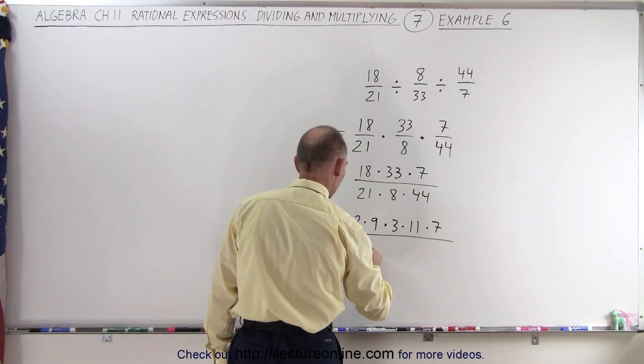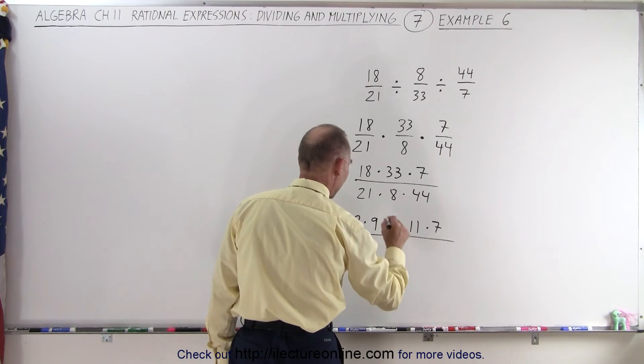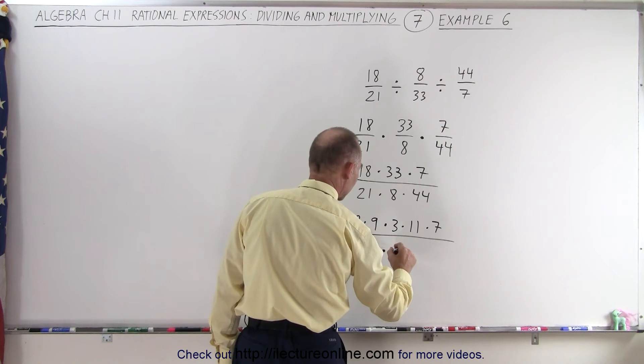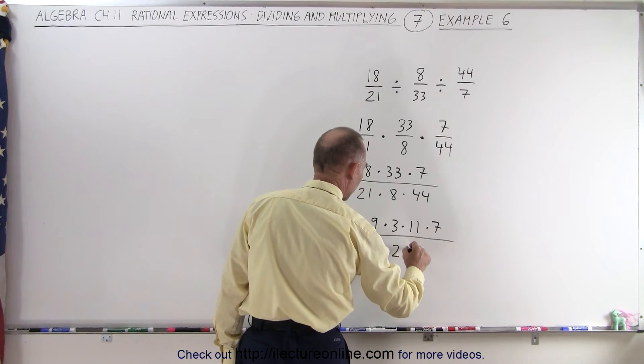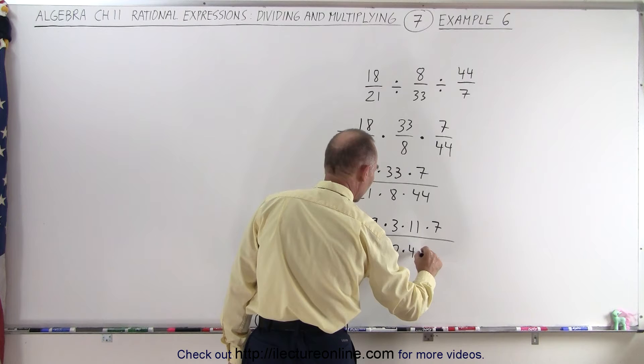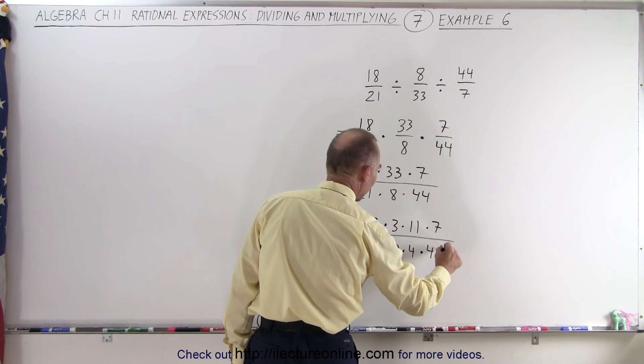divided by 21 would be 3 times 7, 8, let's say we can write it as 2 times 4, and 44 that can be written as 4 times 11.